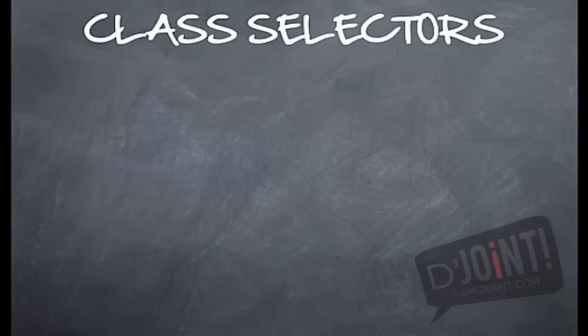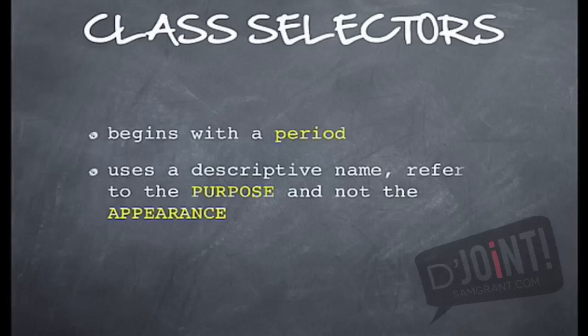So to recap what a class selector actually does, it literally always begins with a period. Definitely make sure you put the period in front of it whenever you're writing the CSS. Second, use a descriptive name referring to the purpose and not to the appearance of the tag.